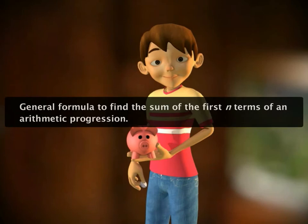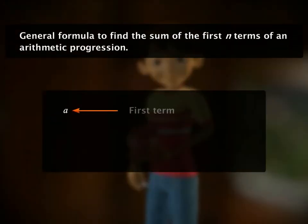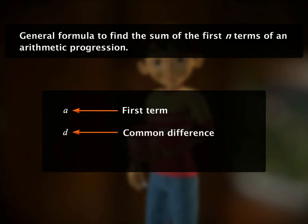Let's now derive the general formula to find the sum of the first n terms of an arithmetic progression. Let's say a is the first term, d is the common difference of the terms, and n is the number of terms whose sum is to be found out.